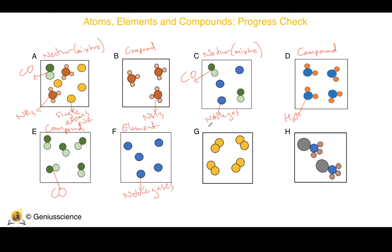Now on to G. G is obviously an element, one type of atom, but there are two atoms here bonded as a molecule.